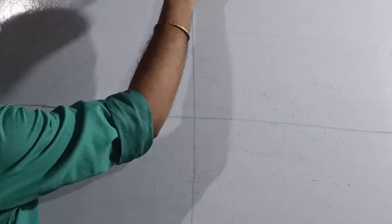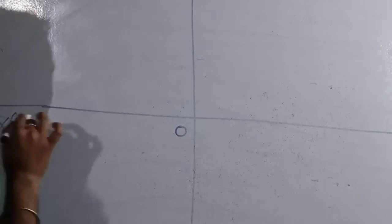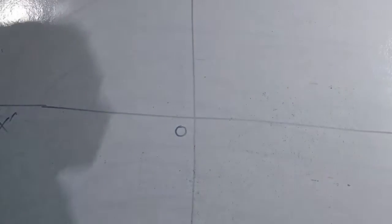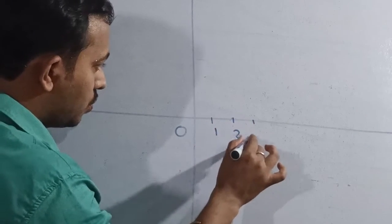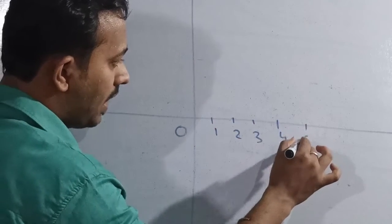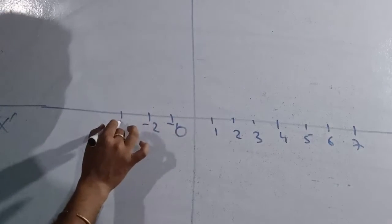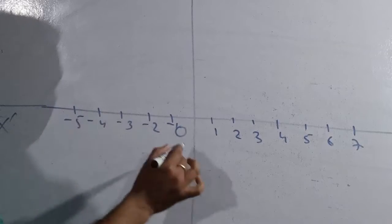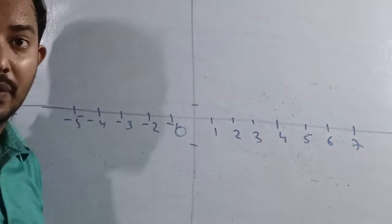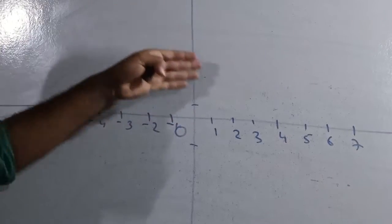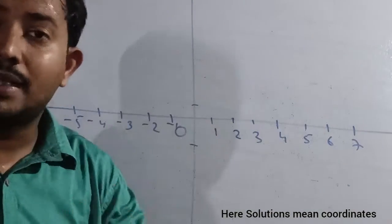Now we need the coordinate plane. Origin here, y-axis, x-axis. Now here we'll go like this: one, two, three, four, five, six, seven. And this side will go minus one, minus two, minus three, minus four, minus five. Before writing here, you need to look at the solution and make the key.